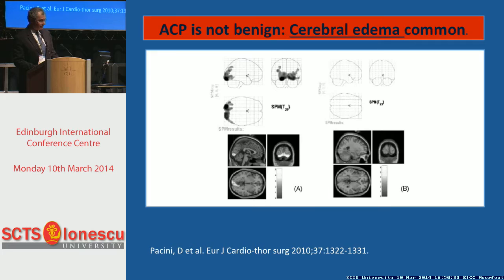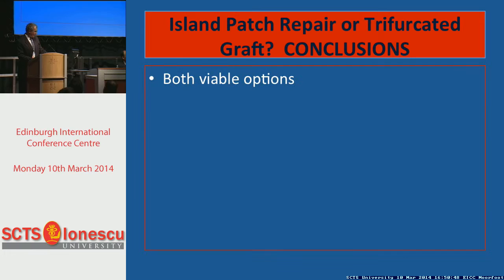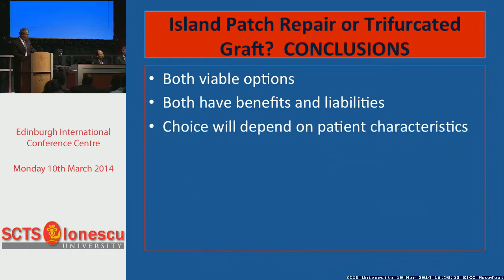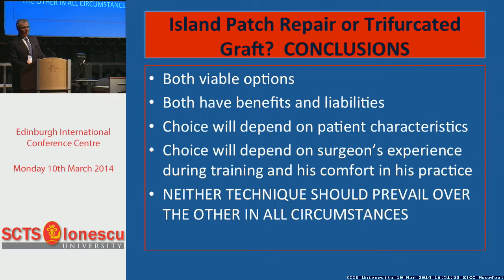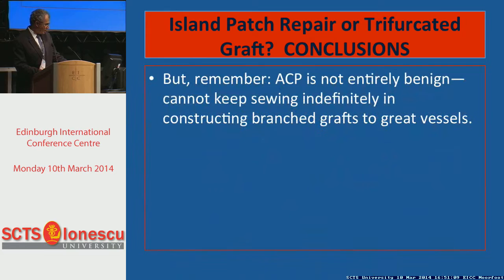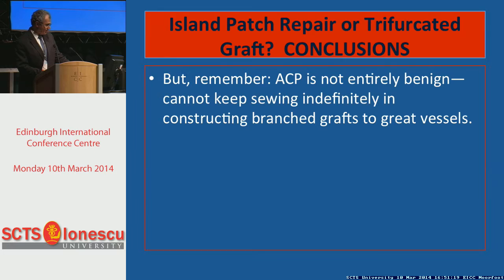Island patch or trifurcated — I think they're both viable options with benefits and liabilities. The choice depends on the individual patient, anatomy, and especially your experience and comfort level. Neither surgical option prevails definitively. But we should all remember that antegrade cerebral perfusion is not entirely benign, and you can't keep sewing indefinitely for multiple vessel anastomoses without some detriment to the brain.